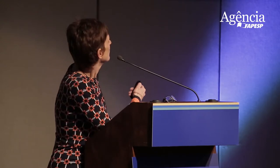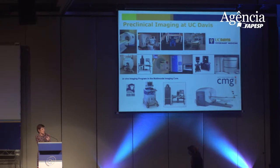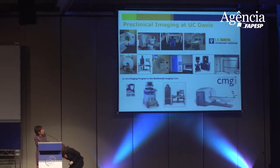At UC Davis, they've heavily invested in imaging. Around 2002, they hired about seven faculty in imaging. We have a lot of imaging infrastructure. As you heard from Harris Lewin this morning, we have the number one vet school in the world, and within the vet school we have essentially a nuclear medicine department. In our preclinical imaging center, which I co-direct, we have all imaging modalities — SPECT, optical, PET, MR, ultrasound, and a dedicated biomedical cyclotron.